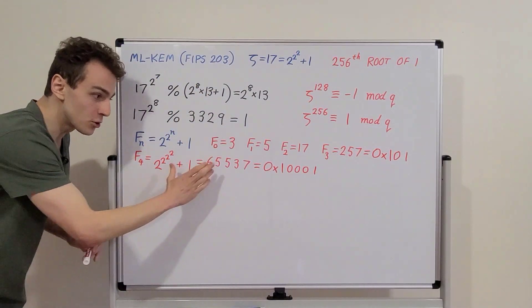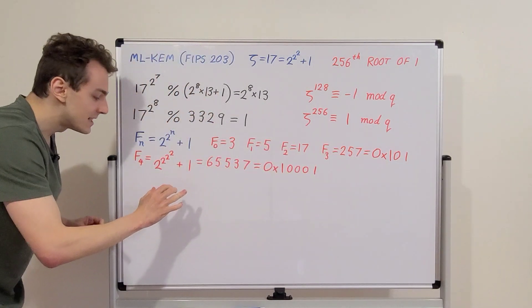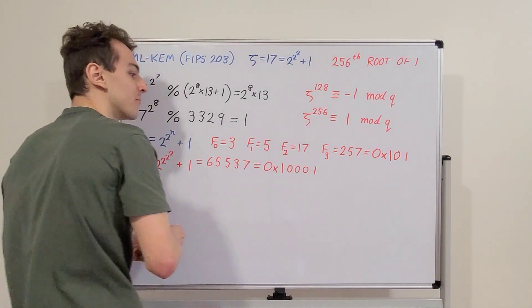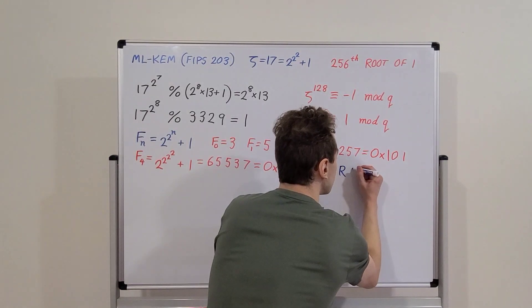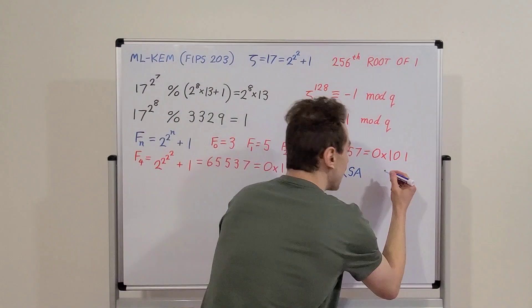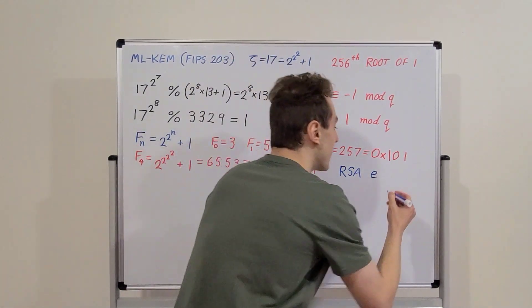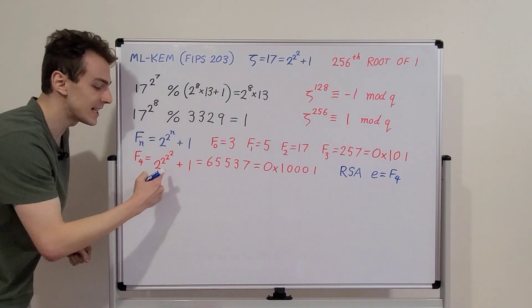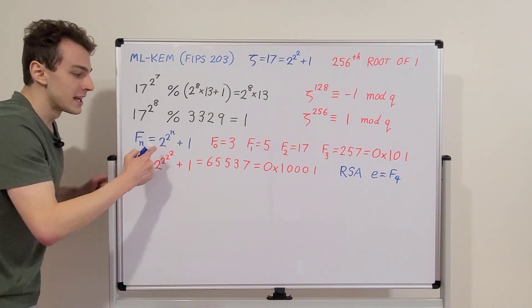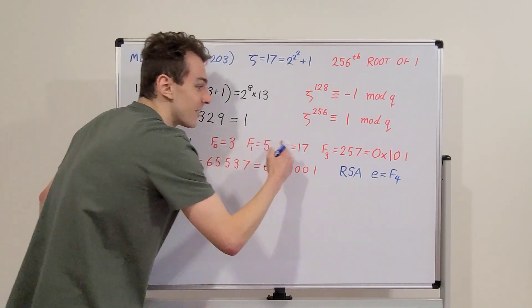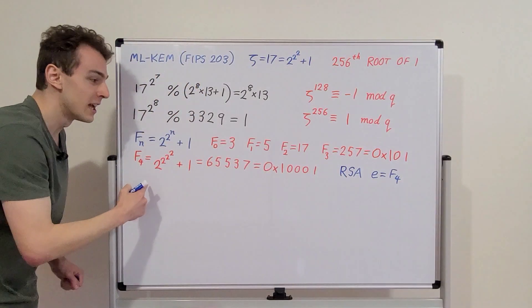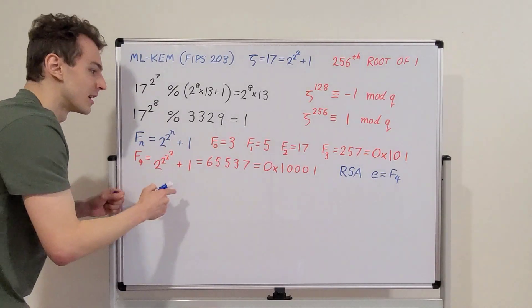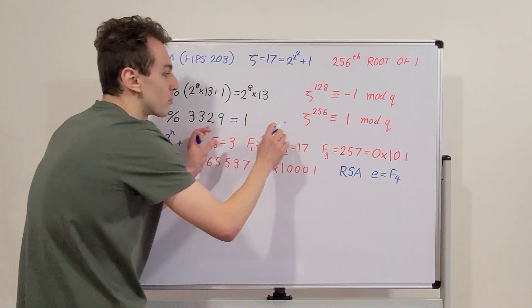F4 is also prime — so all of F0, F1, F2, F3, and F4 are prime. This is very special. F4 is used as the encryption exponent in RSA cryptography. In RSA — that's Rivest Shamir Adleman — a common choice for E, the encryption exponent, which is part of the public key, is F4. Not all numbers that have this Fermat format are going to be prime, but F0 through F4 are very special because they satisfy both conditions.